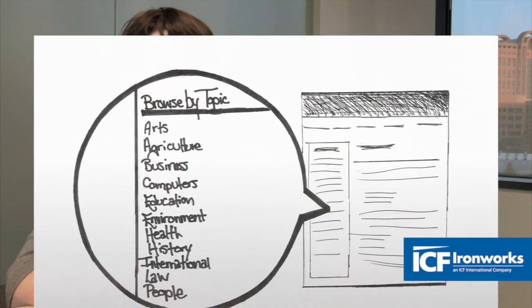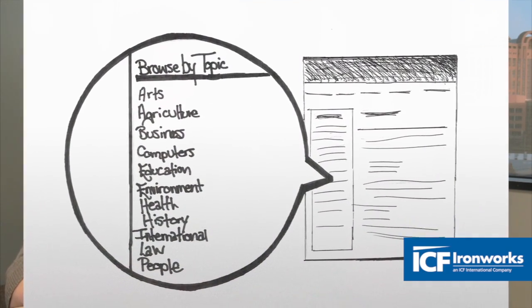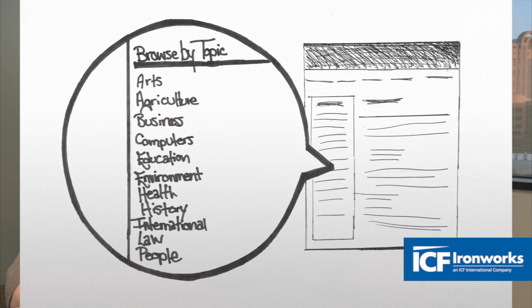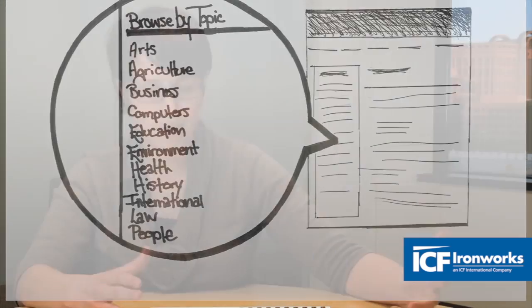Another thing we often encourage when designing for users is providing a set of topics for them to narrow down content by. So users can browse content by art, computers, or any other category. That's an idea you can use in a general way.